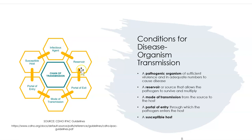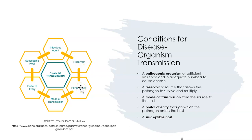Portal of exit is how germs leave the infected person's body — through coughing, sneezing, vomiting, saliva, or blood. Mode of transmission is how the infection spreads from one person to another — through touching, through droplets when speaking, sneezing, or coughing. Portal of entry is how germs get inside the new host — through breathing, cuts in the skin, or through the eyes.